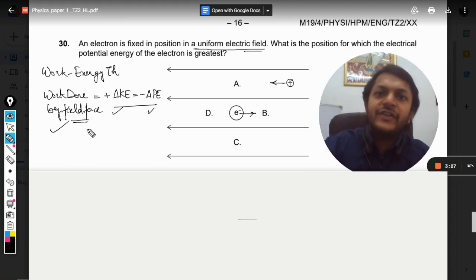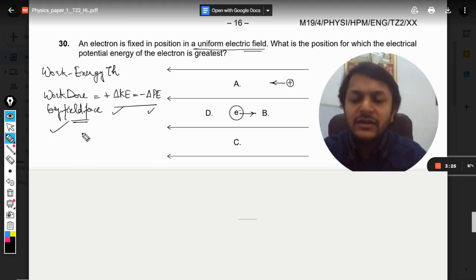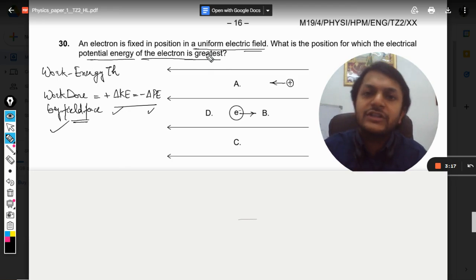On the contrary, if we are not going in the direction of field force, we are going against it, the kinetic energy will reduce and potential energy will increase. Now the question is where the potential energy of the electron is greatest. So it means we have to move in a direction in which the potential energy will increase.